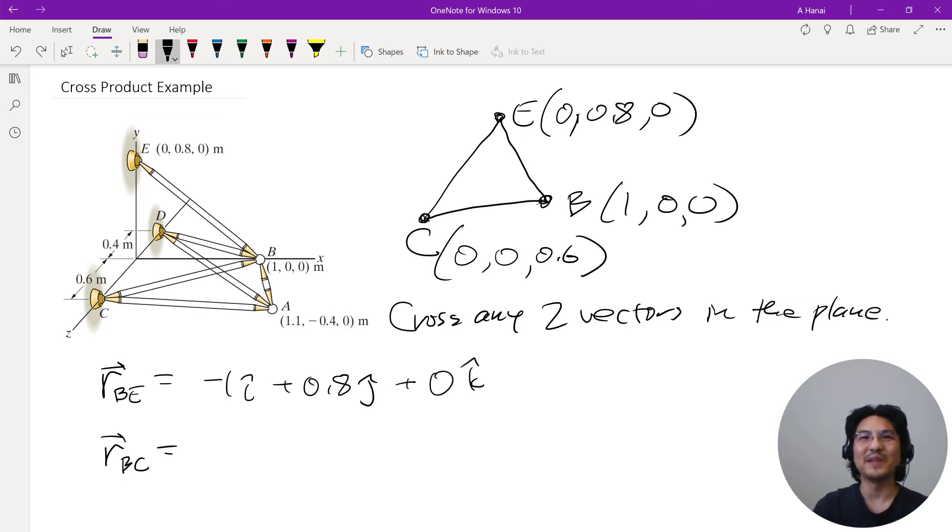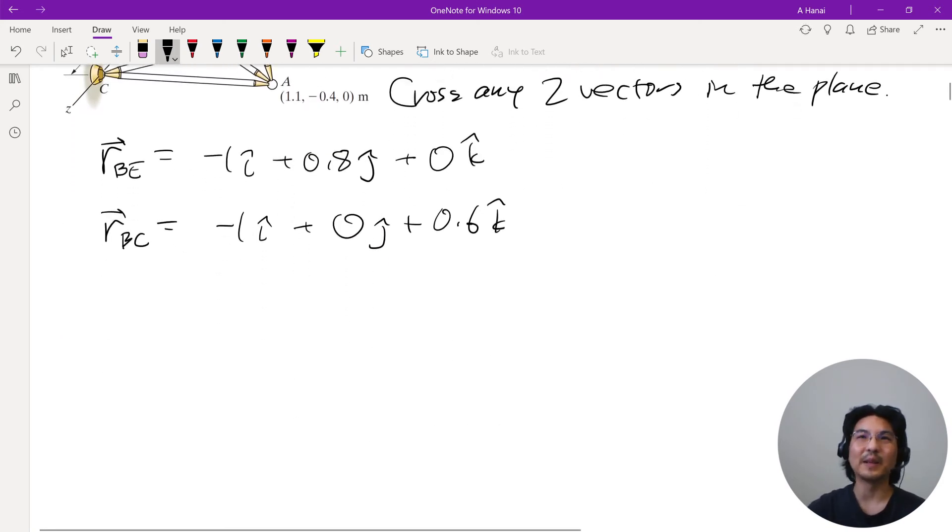So then from B to C, 0 minus 1. In the y direction, 0 minus 0. And then in the z direction, 0 minus 0. Okay, so we got our two vectors in the plane.